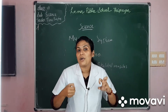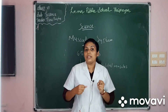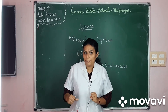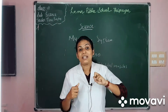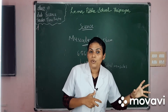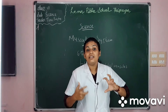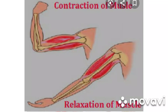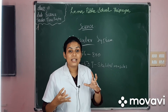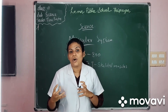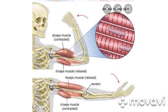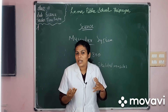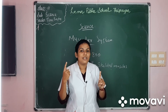When muscles contract, they pull the bones along with them. However, contracted muscles cannot push the bone back on their own — another muscle is required to pull the bone back. This is why muscles work in pairs for the movement of the bones.